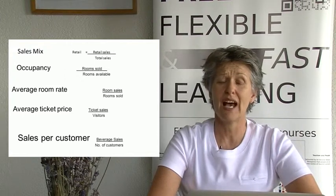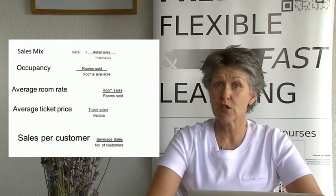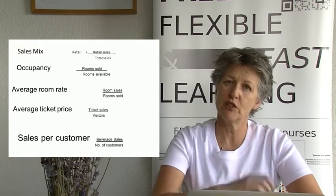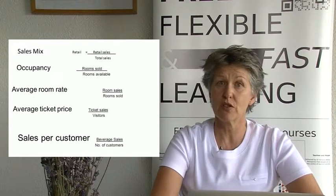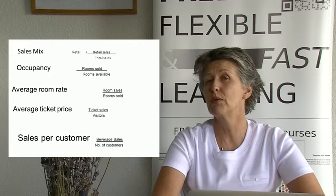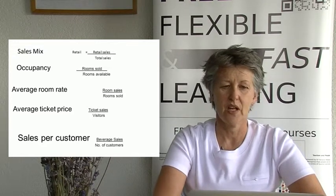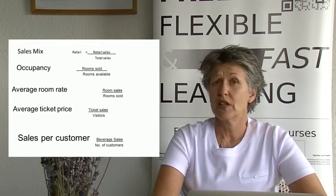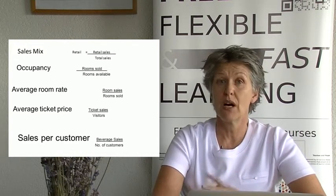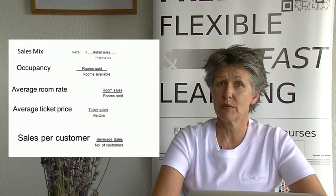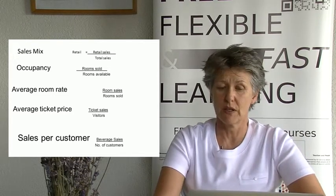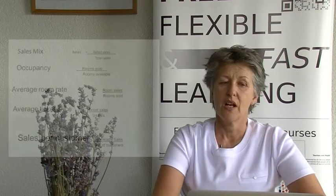We'll also look at average rate per inventory unit sold. In a hotel that's average room rate: room sales divided by rooms sold, giving a monetary amount. If comparing businesses across the world, make sure average room rate is in a common currency for proper benchmarking. In a tourist attraction you might look at average ticket price — ticket sales divided by number of visitors. In a restaurant or bar, calculate sales per customer: beverage sales divided by number of customers.